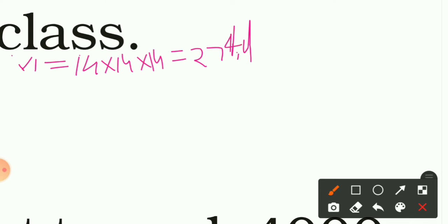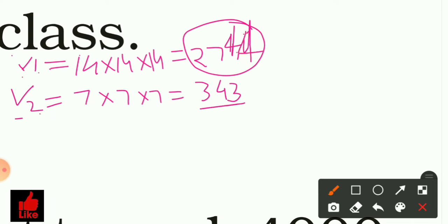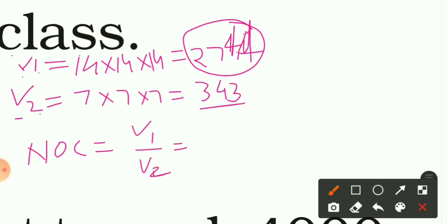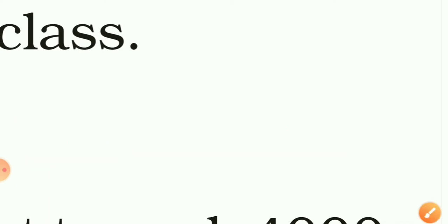Now we find V2, the volume of our paper cube. Its side was 7 cm, so its volume is 343 cubic centimetres. The number of cubes = V1 ÷ V2 = 2744 ÷ 343 = 8. So in this way we confirm that 8 cubes are needed to fill Anand's cube.